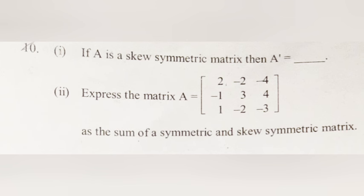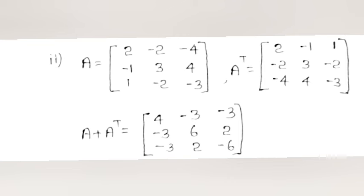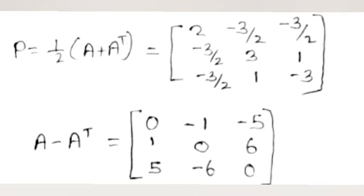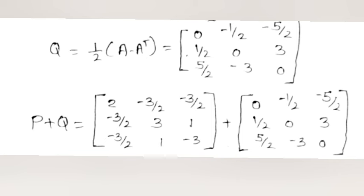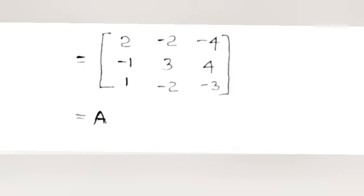Problem 10.1: If A is a skew symmetric matrix, then A^T = -A. Problem 10.2: Express matrix A = [[2,-2,-4],[-1,3,4],[1,-2,-3]] as the sum of symmetric and skew symmetric matrices. A^T = [[2,-1,1],[-2,3,-2],[-4,4,-3]]. P = ½(A + A^T) is the symmetric part; Q = ½(A - A^T) is the skew symmetric part, and P + Q = A.